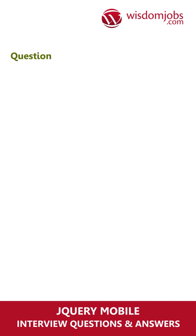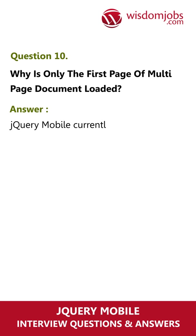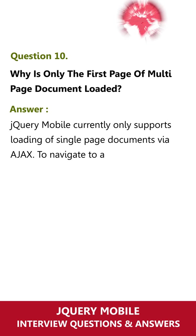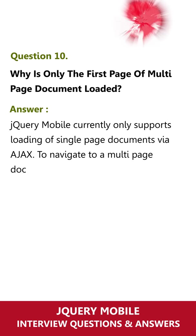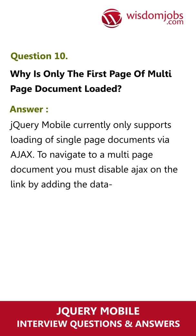Question 10. Why is only the first page of a multi-page document loaded? jQuery mobile currently only supports loading of single page documents via Ajax. To navigate to a multi-page document you must disable Ajax on the link by adding the data-ajax equals false attribute.